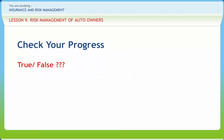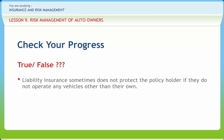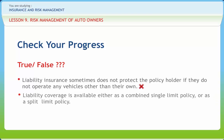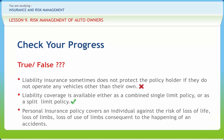Now let us check if we have understood the various concepts discussed in this lesson. First: liability insurance sometimes does not protect the policyholder if they do not operate any vehicles other than their own — Right or Wrong? Wrong. Second: liability coverage is available either as a combined single limit policy or as a split limit policy — Right or Wrong? Right. Third: personal insurance policy covers an individual against the risk of loss of life, loss of limbs, and loss of use of limbs consequent to the happening of accidents — Right or Wrong? Right.